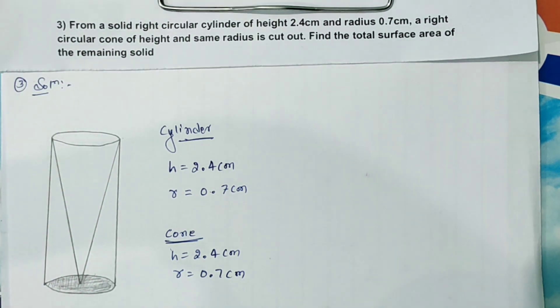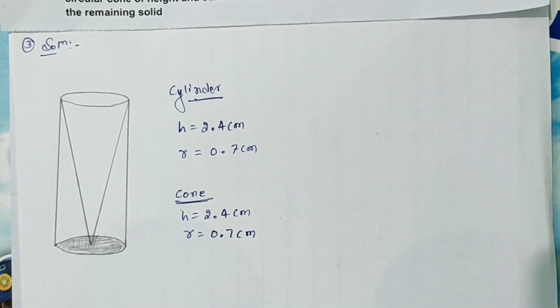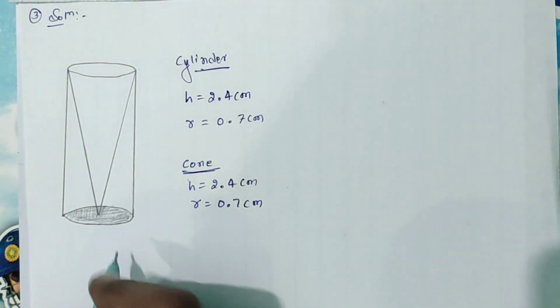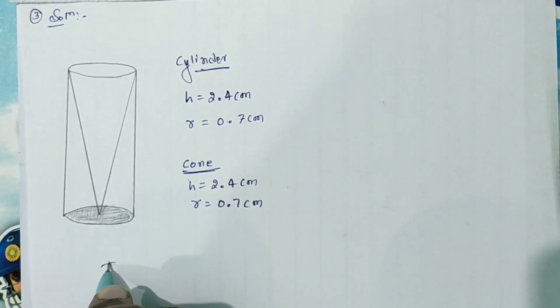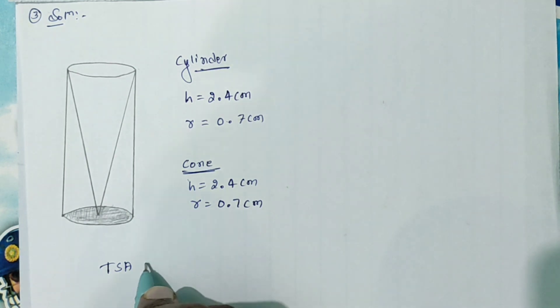Then after taking out the total surface area of remaining solid, we need to find. To find the total surface area of the remaining solid, we are having the formula as total surface area of cone.